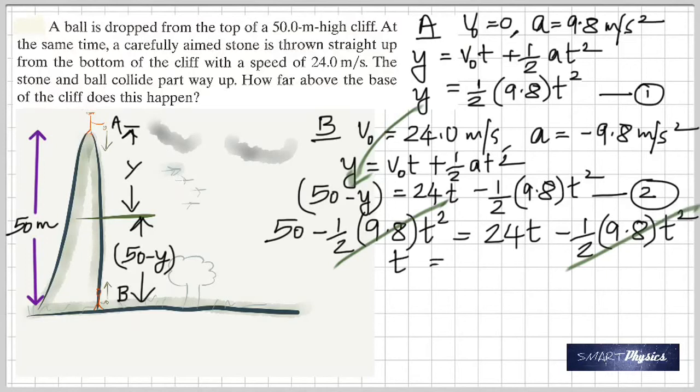Then you can solve for t to get it as 50 divided by 24, actually 50.0 divided by 24.0, which is 2.08 seconds. Once we find the time, we can find y just by substituting into equation one.